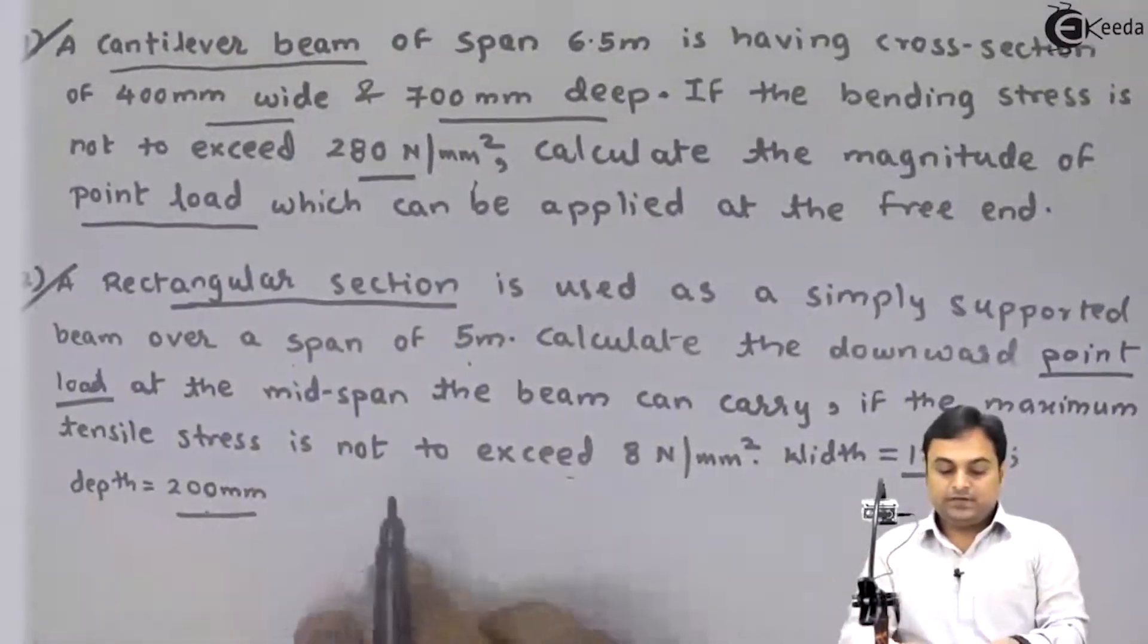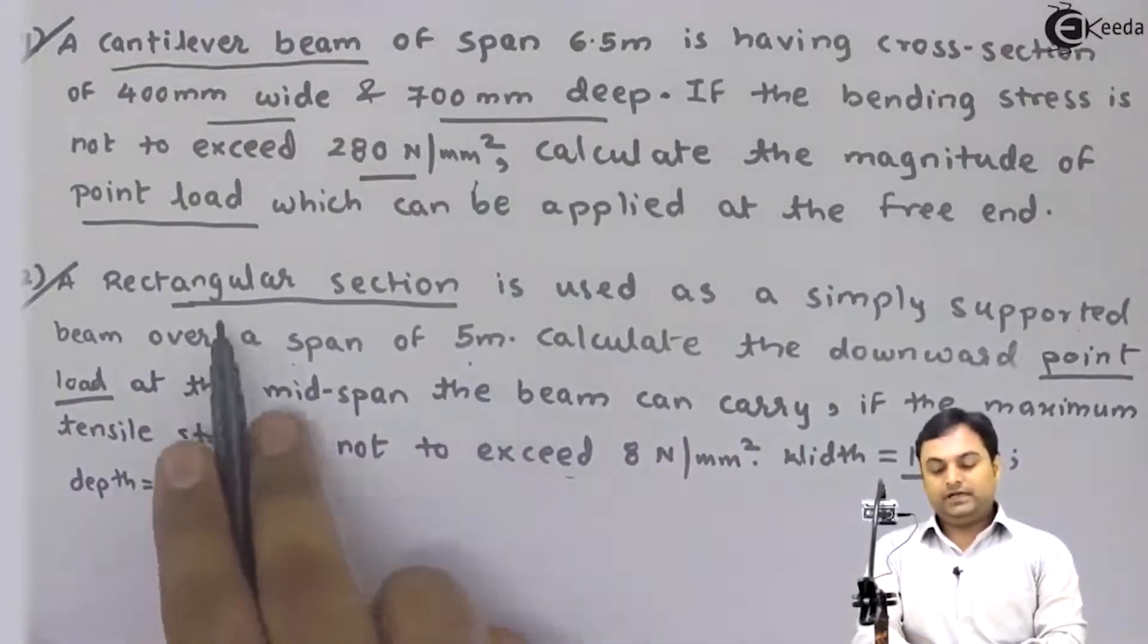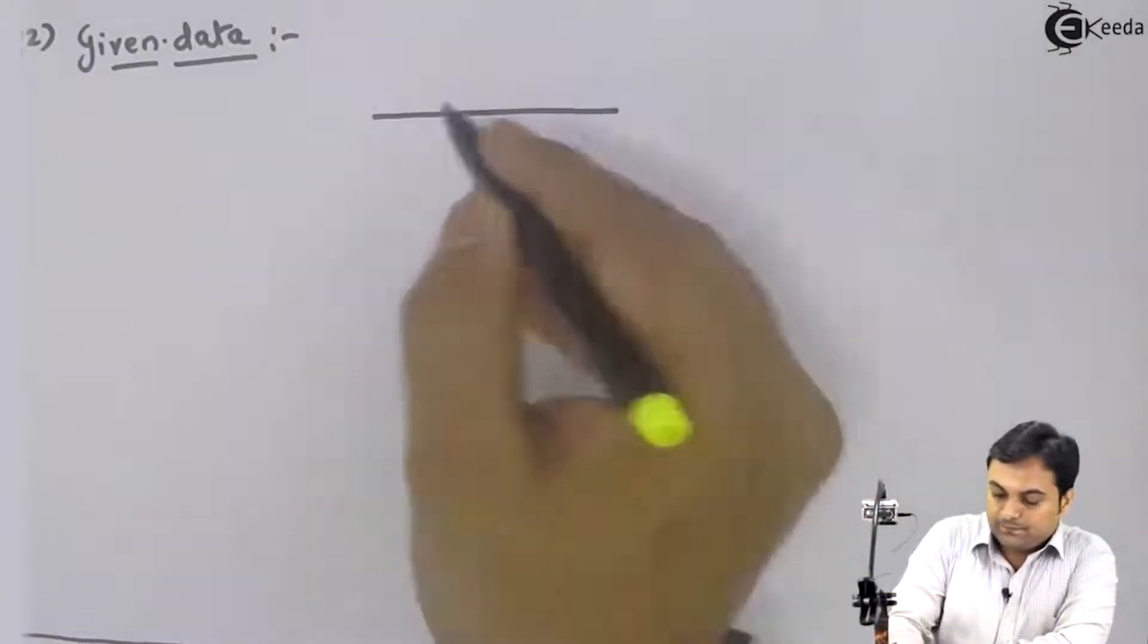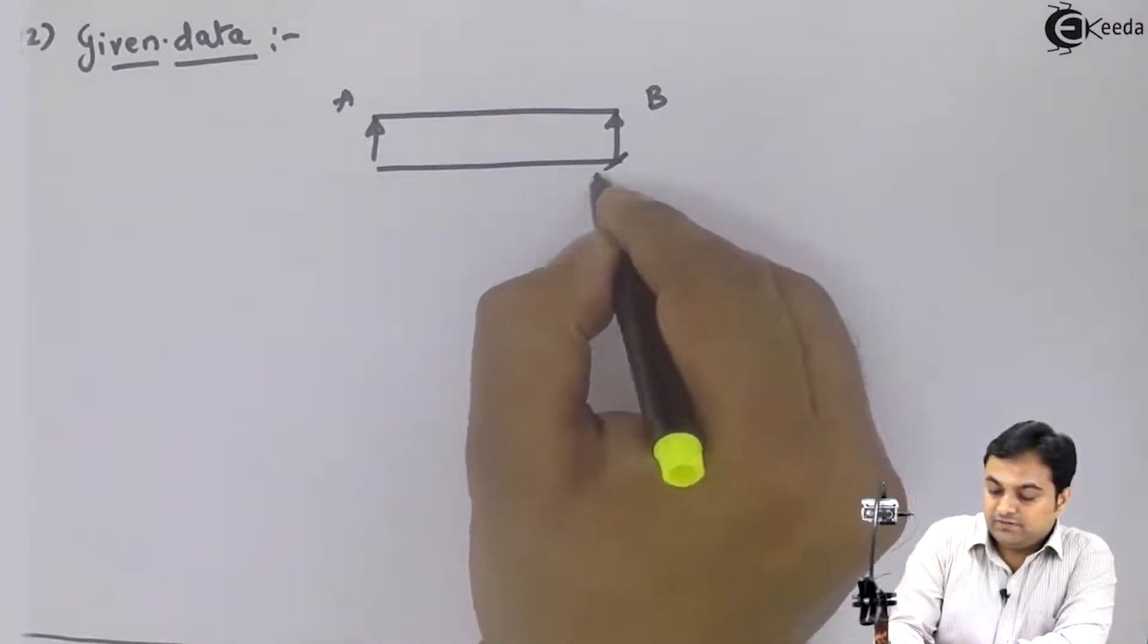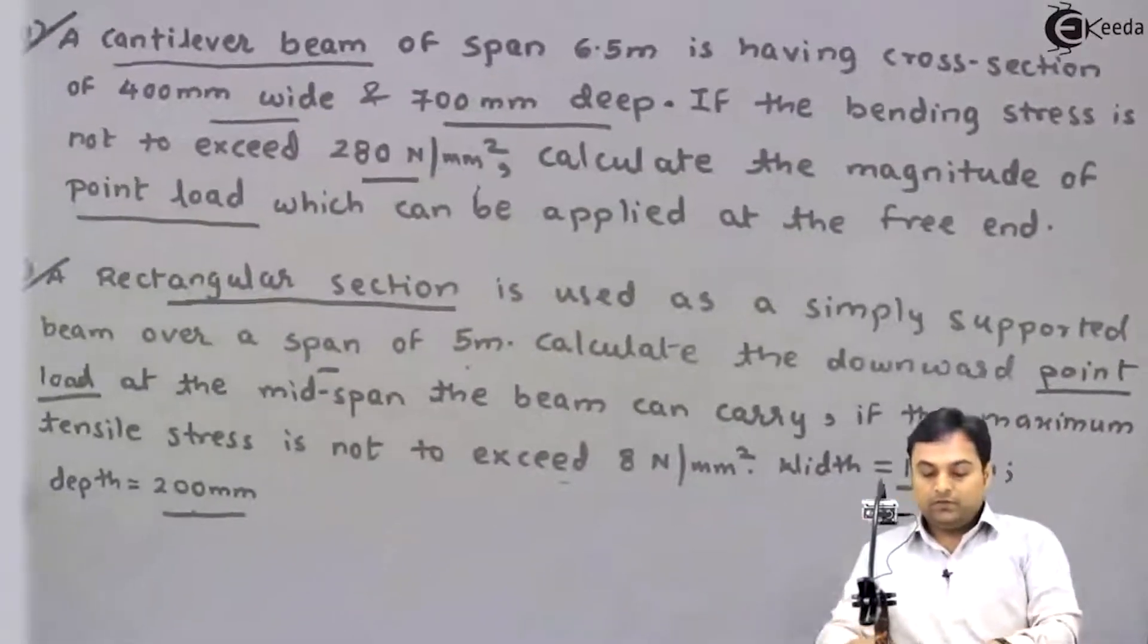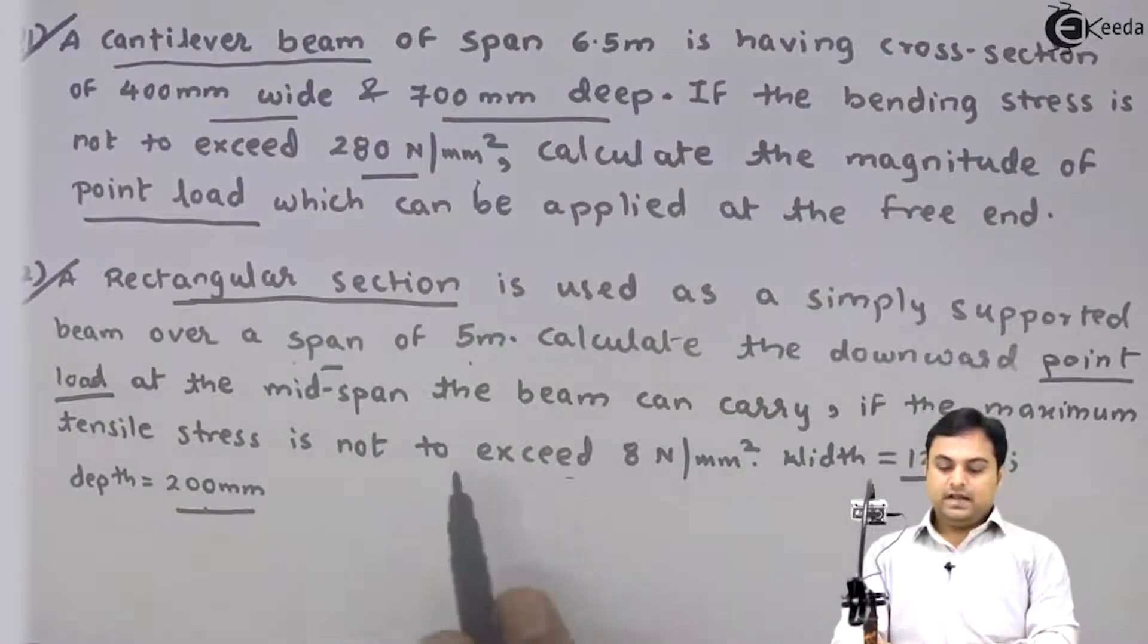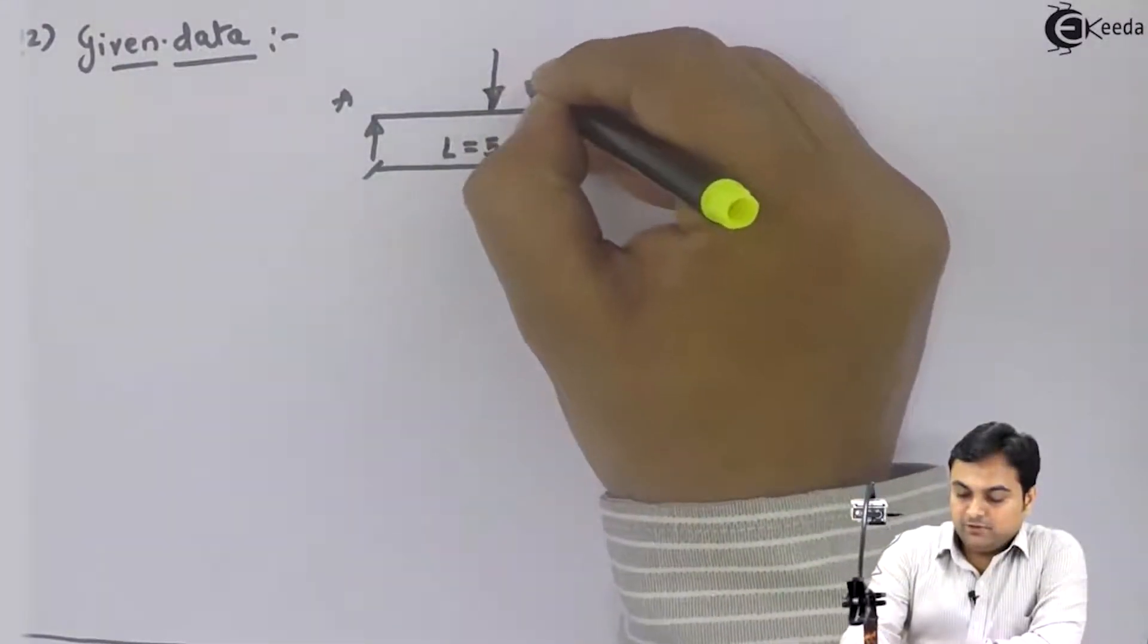What is given: a rectangular section is used as a simply supported beam over a span of five meters. So it is like this. You have to use the rectangle as a simply supported beam having its length as five meters. Calculate the downward point load at the mid span means at the center. So exactly at the center we are applying a point load, I'll write this as C.